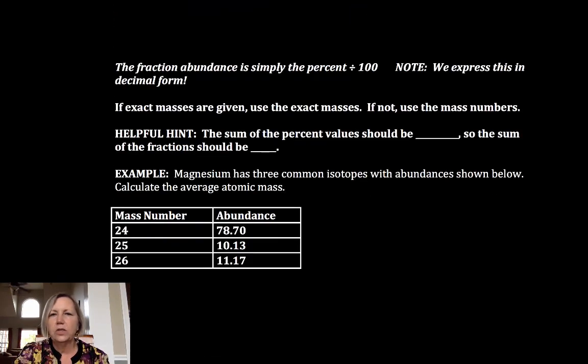So let's take a look. The fraction is simply the percent divided by 100. We usually use decimal forms. If exact masses are given, use those exact masses. If not, use the simplistic mass numbers.